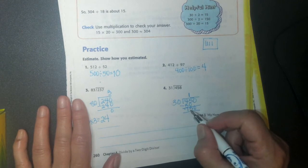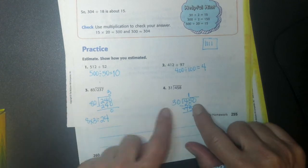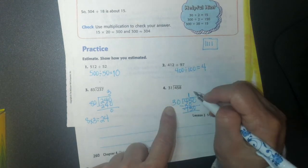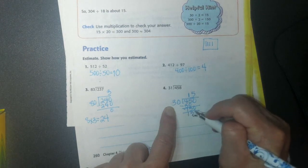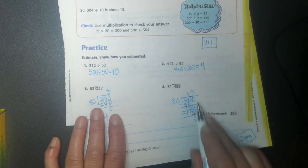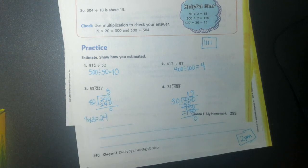Can 30 go into 150? So I'm going to say 3 times 5 is 15. So 5 times 30 is 150. I subtract, I get 0. So my answer is 15.